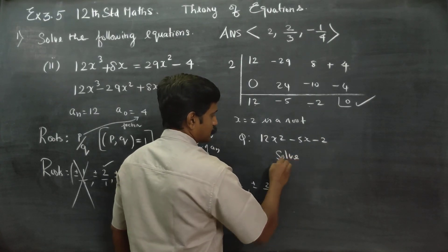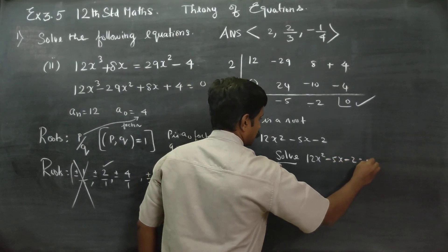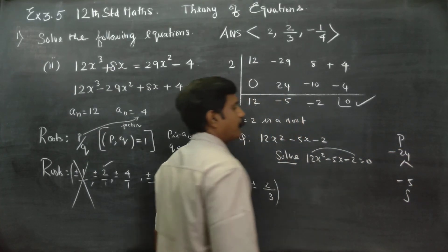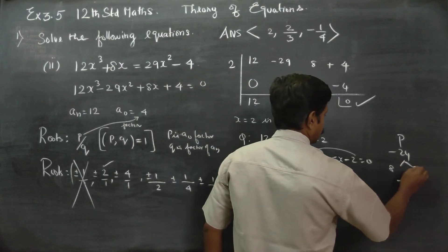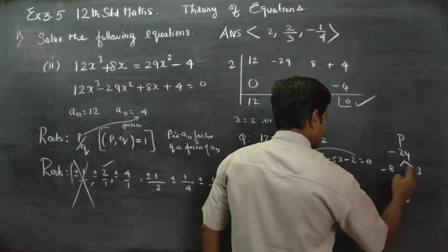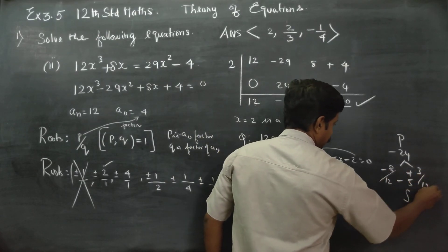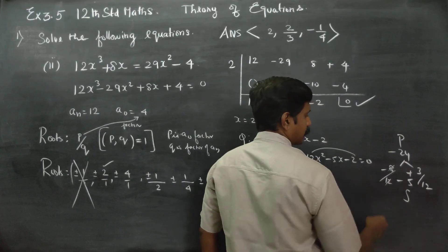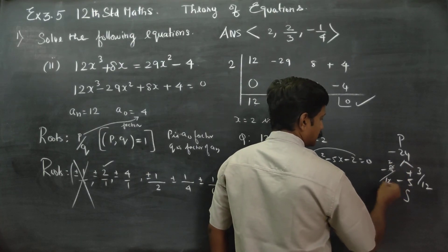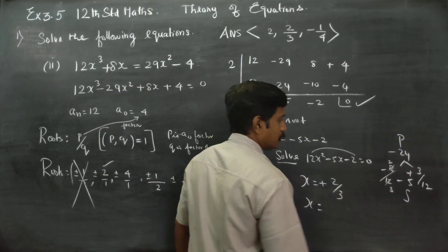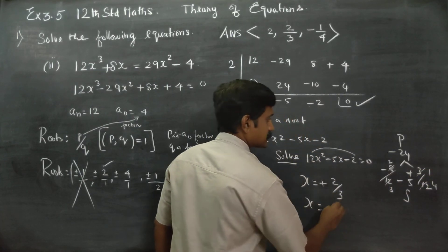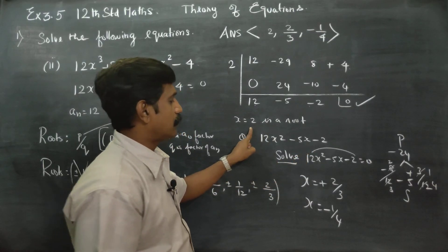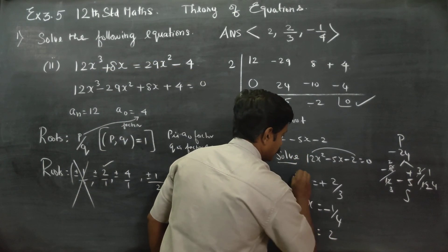Now solve 12x² minus 5x minus 2 equals 0 using product-sum method. Product is minus 24, sum is minus 5, giving factors minus 8 and 3, since 8 times 3 is 24 and minus 8 plus 3 is minus 5. Dividing by 12 and cancelling: x equals 2 by 3 and x equals minus 1 by 4. So the three roots are x equals 2, x equals 2/3, and x equals minus 1/4.